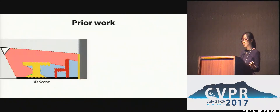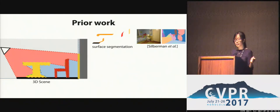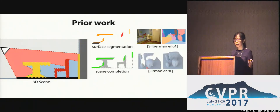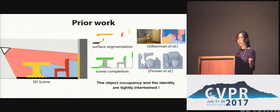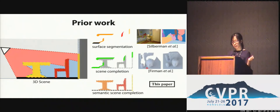Prior work is mostly limited in addressing only part of the problem. For example, RGBD segmentation considers only the visible surface without the full 3D shape, and shape completion considers only local geometry without semantics. However, we observe that object occupancy and their semantics are tightly intertwined. Therefore, we should address these two problems jointly.